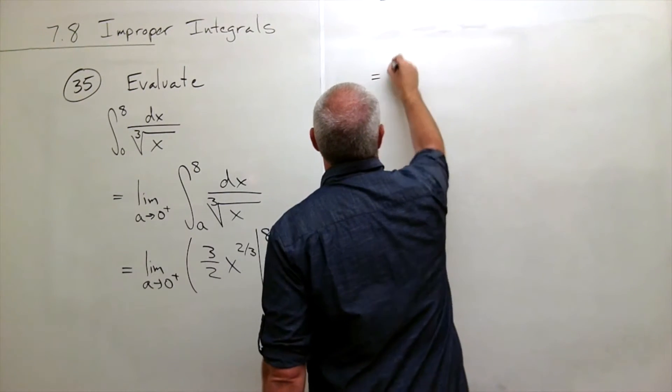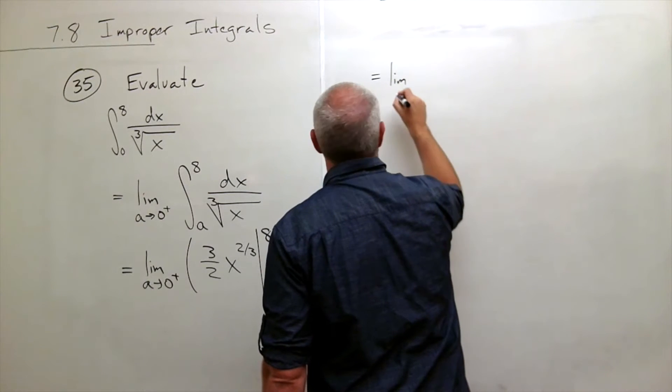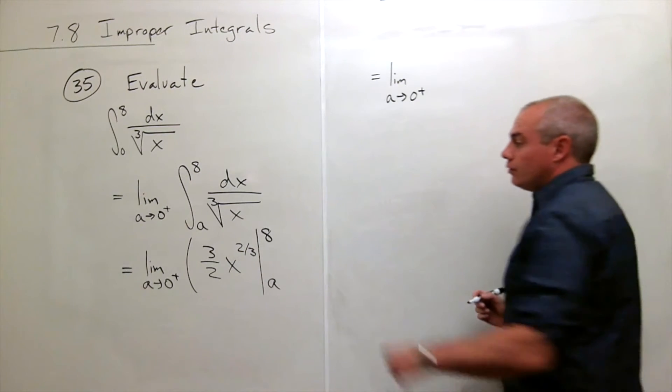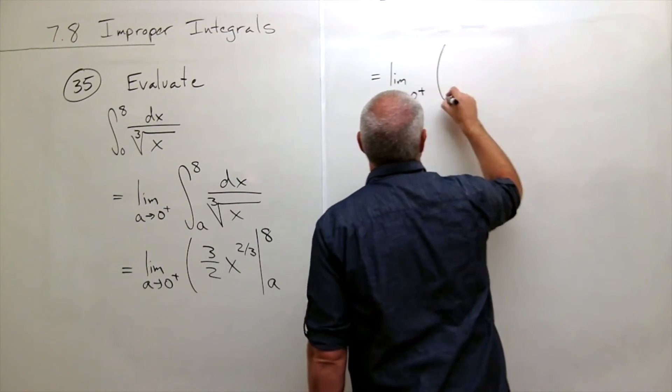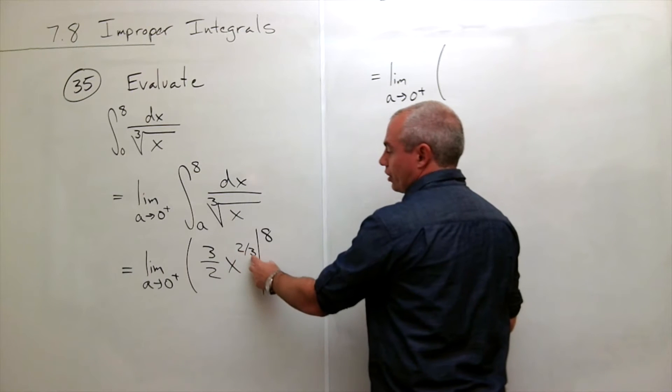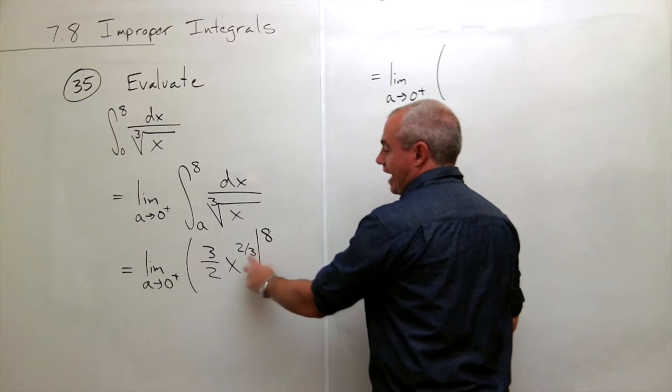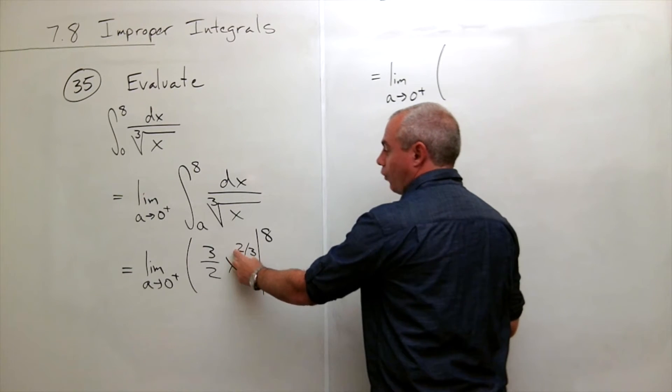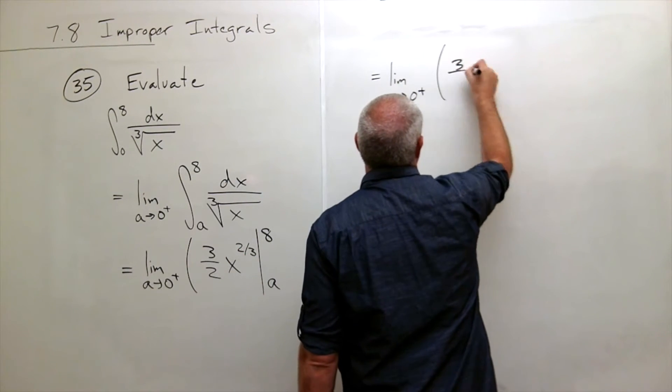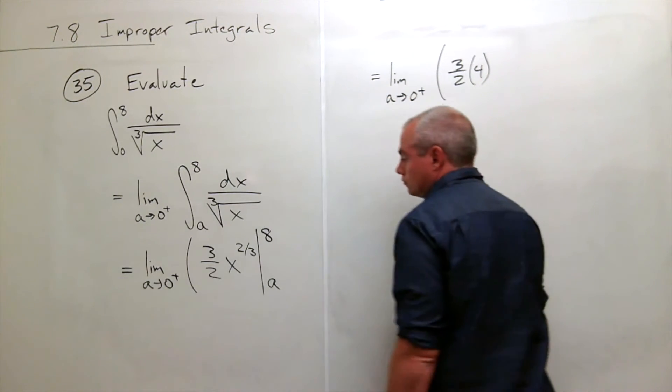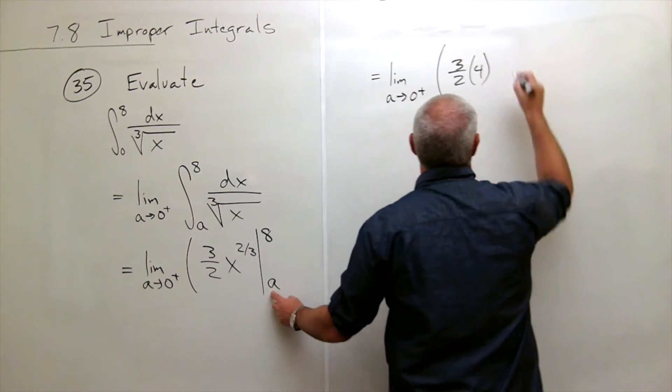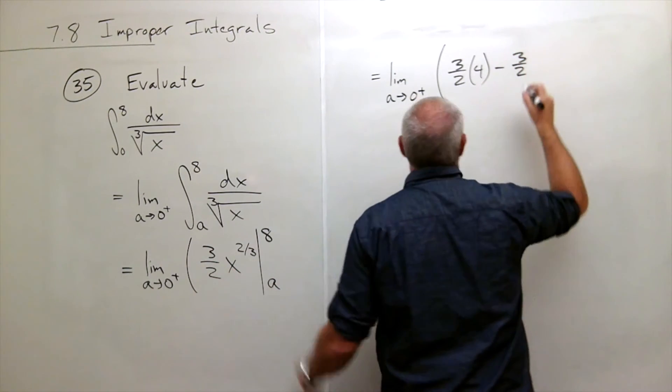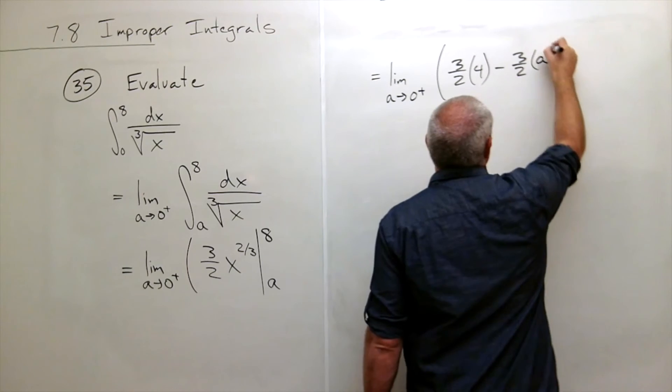Now we can plug things in. I still have a limit as a goes to 0 from the right of, we plug in 8, and what do we get? We get 8 to the two-thirds. Well, that says take 8 and cube root it, which is 2, then square it, which is 4. So I have 3 halves times 4. Then I need to plug in the a, minus 3 halves times a to the two-thirds.